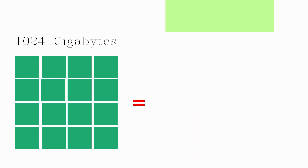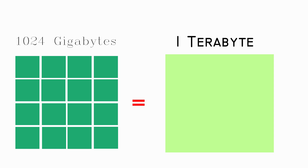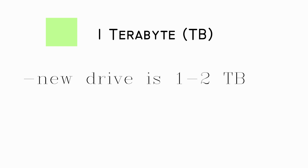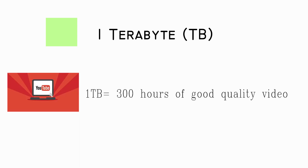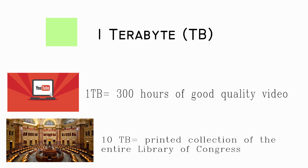1024 gigabytes is called a terabyte. These days, 1 and 2 terabyte drives are the normal specs for many new computers. Mostly the storage capacity of large storage devices is measured in terabytes. Now consumer hard drives reach the capacity of 1 terabyte. A terabyte could hold about 300 hours of good quality video. 10 terabytes is enough space for the printed collection of the entire Library of Congress. That's a lot of data.